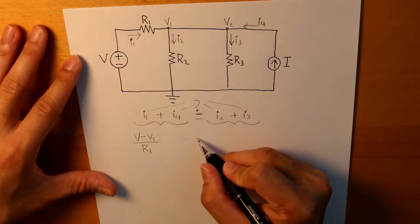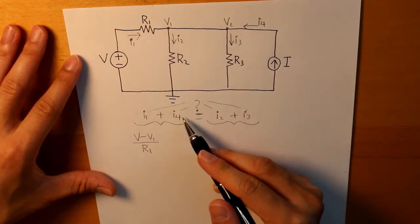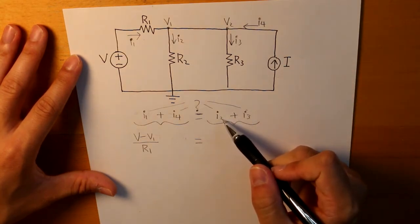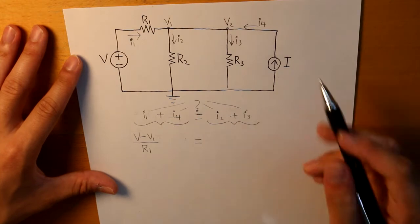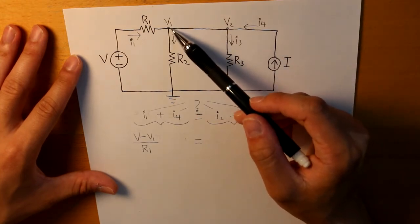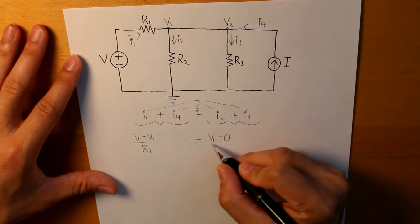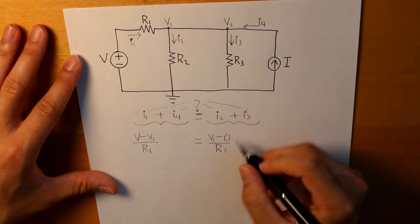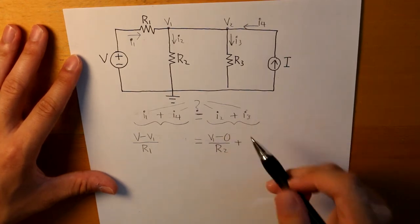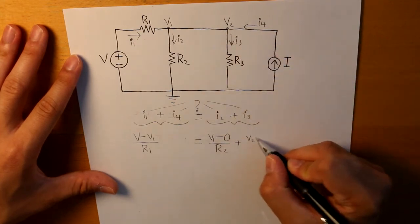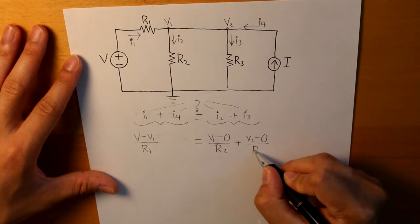I'm going to skip I4 first, because it has a special distinction. But let's continue on onto I2. So I2 flows from V1 to the ground, so that would be V1 minus 0 divided by R2. I3 would be V2 minus 0 divided by R3.